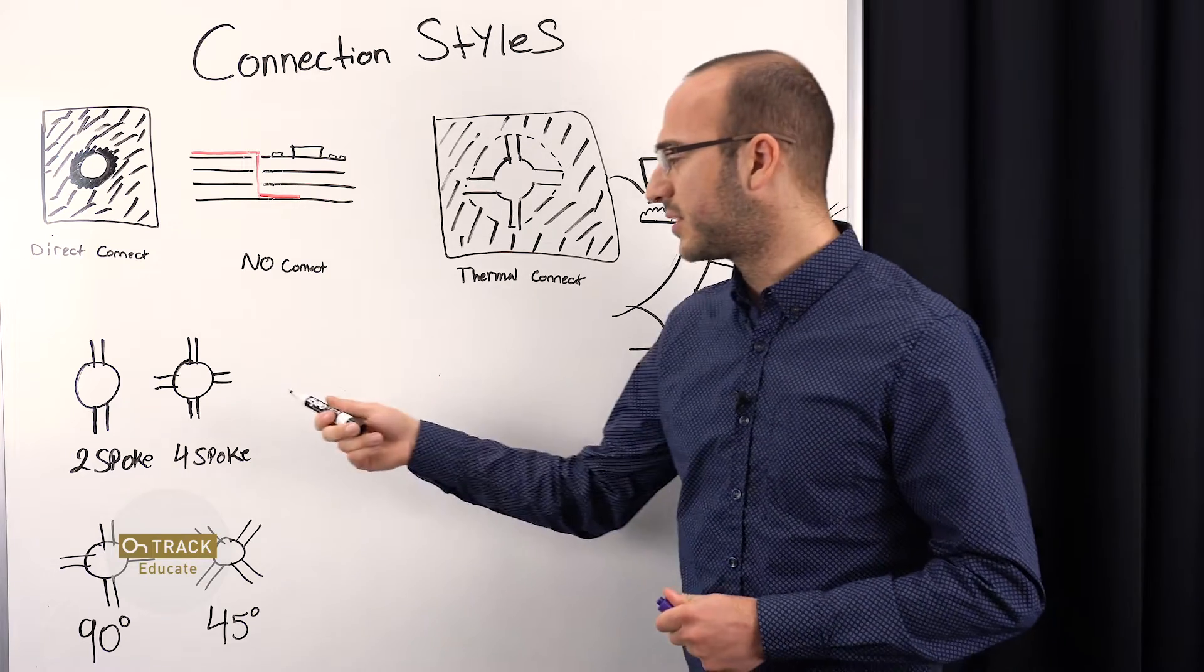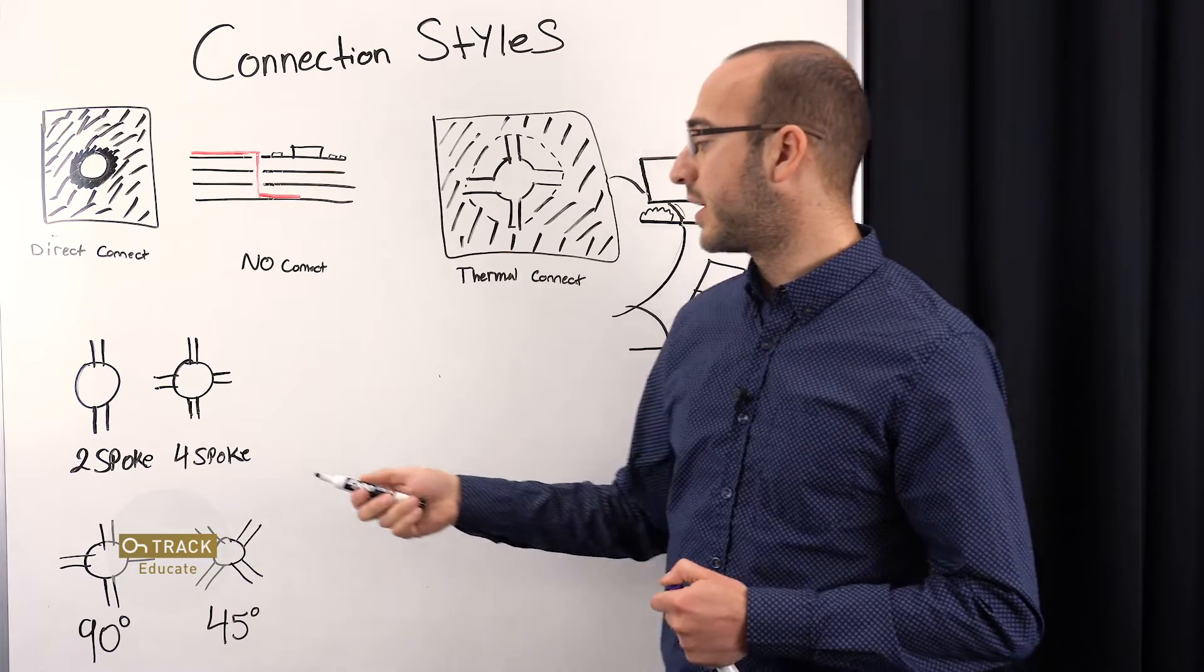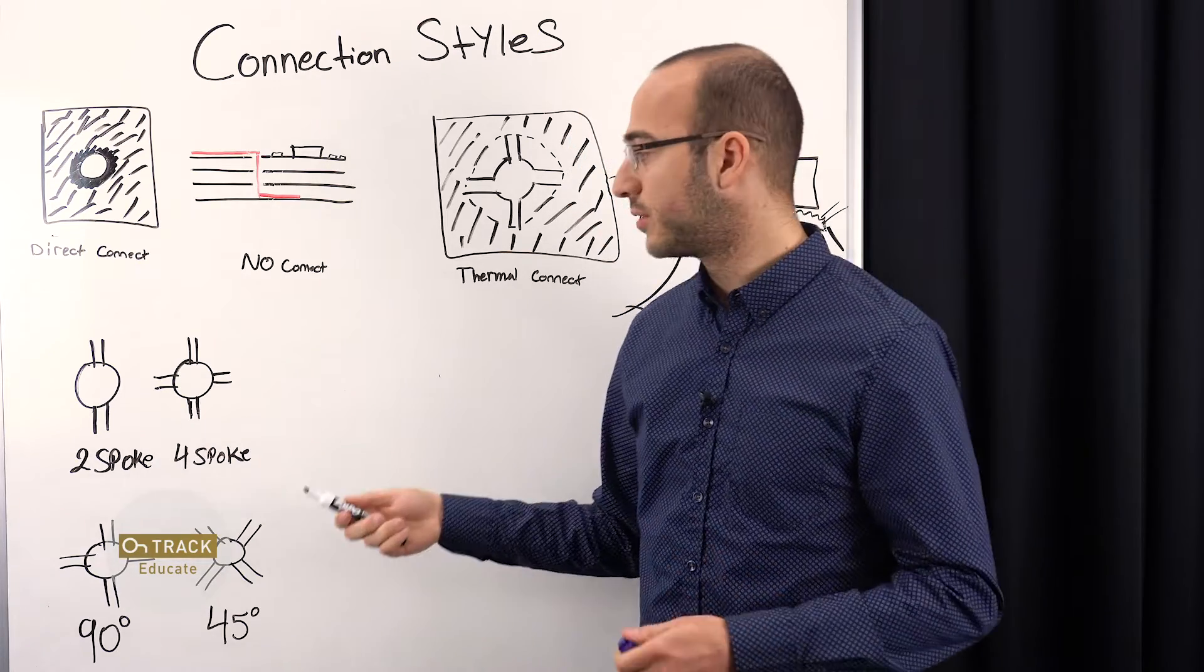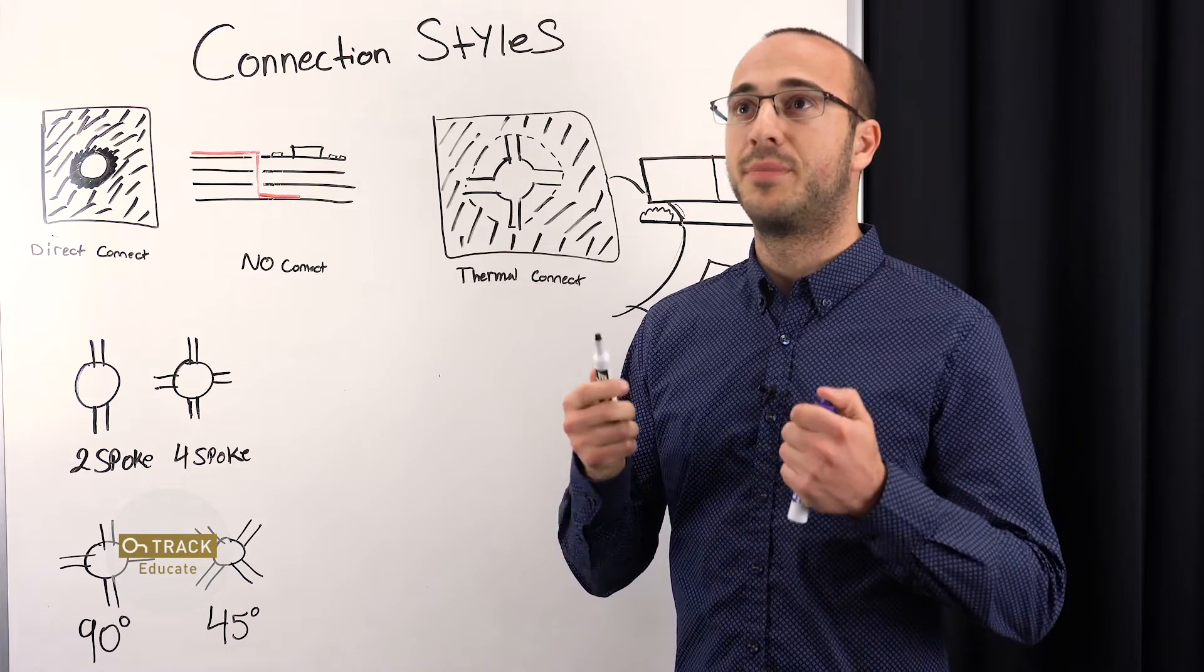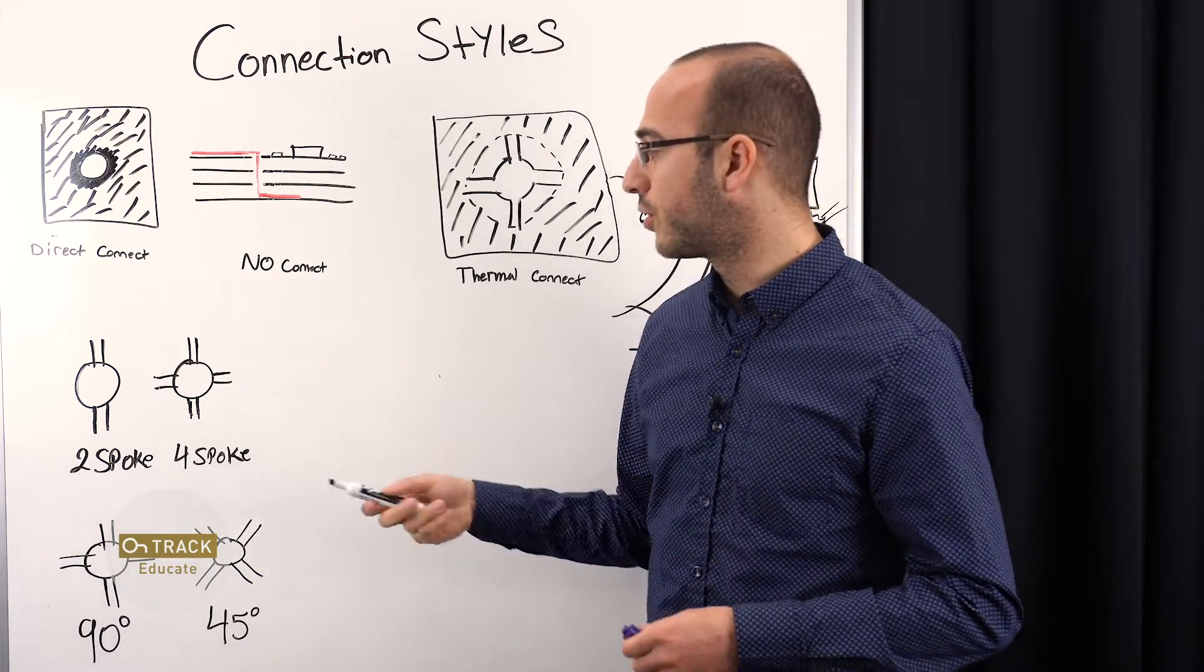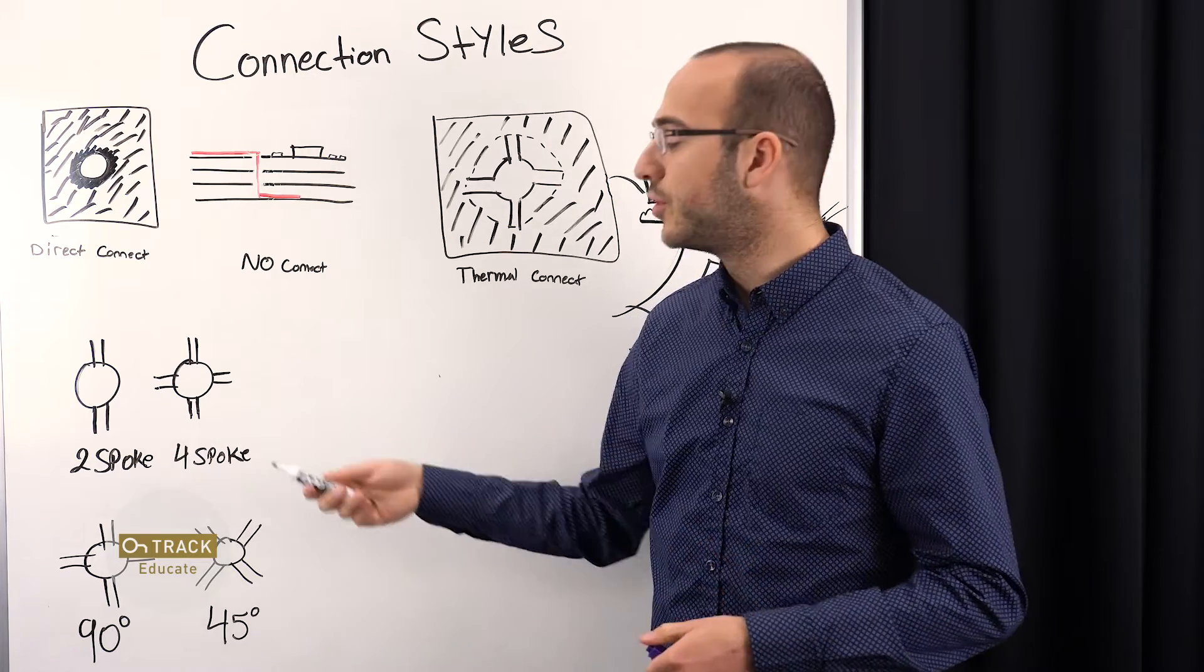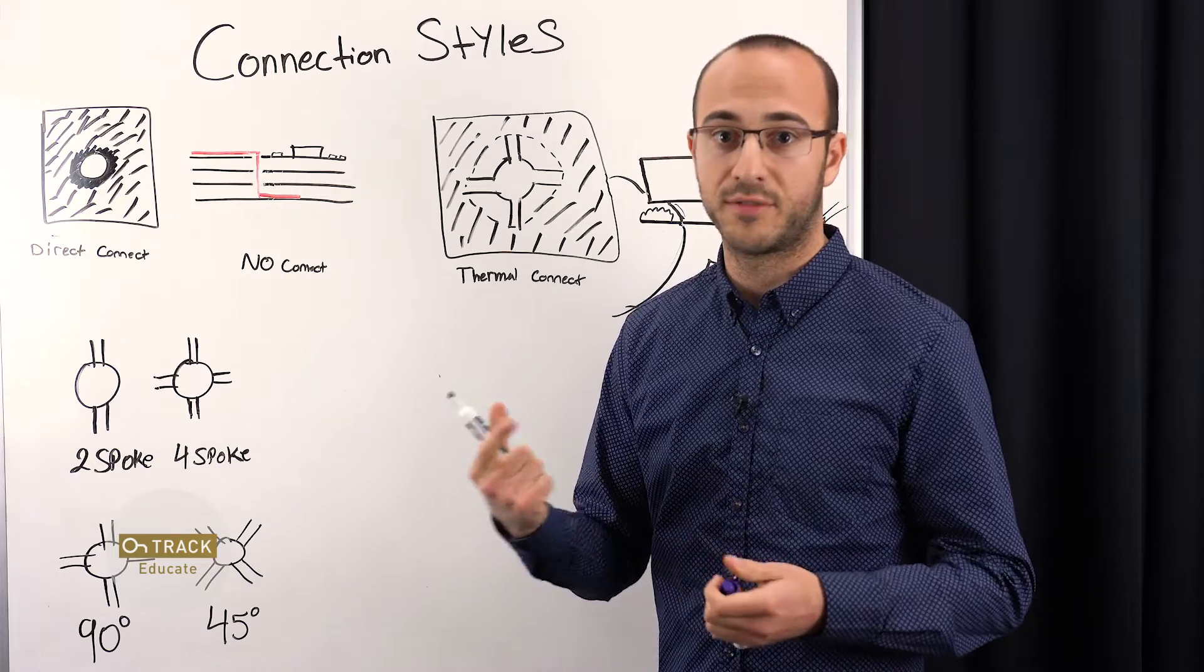So next, let's go to two spokes versus four spokes. Why would you want to have two or four spokes? Well, the reason you would want these different number of spokes is because of the current you're drawing. So if you're drawing more current into a pad or a via, you'd want more spokes. Also, you'd want to adjust the width of those spokes.